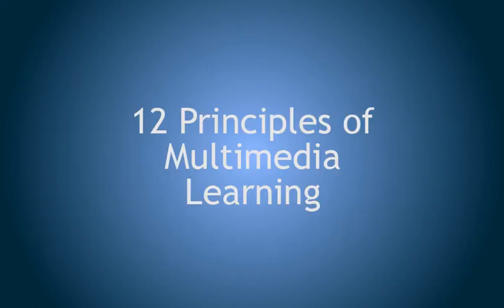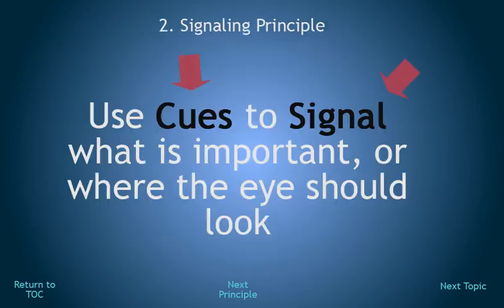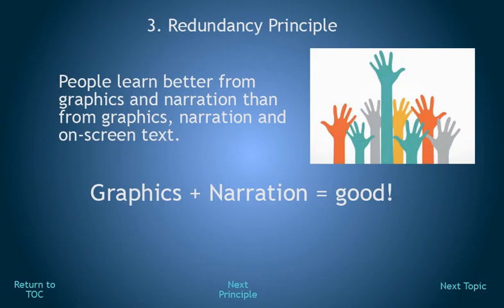The 12 Principles of Multimedia Learning: Extraneous words, pictures, or sounds make it harder to learn. Use cues to highlight what is important or where the person should look. People learn better from graphics and narration than from graphics, narration, and on-screen text.